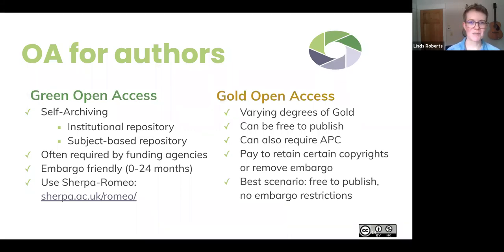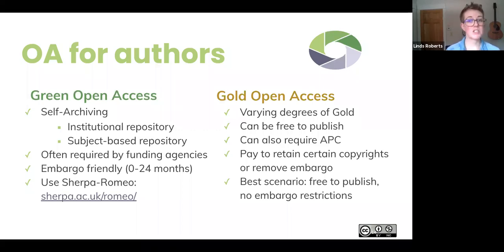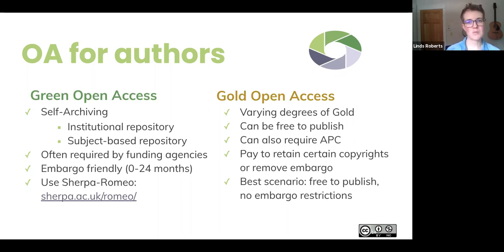Self-archiving is often a way of working with or around traditional publishers. It's pretty friendly to embargoes — some traditional publishers want you to wait anywhere between six months to two years before sharing your work freely, since they want to keep the edge on the latest scholarship. Self-archiving can work around that. We really love Sherpa Romeo, where you can type in the name of a journal and quickly see what their publishing agreements are and if they allow self-archiving. If you're thinking about publishing and open access is important to you, Sherpa Romeo is a great site to explore the journals you're considering.